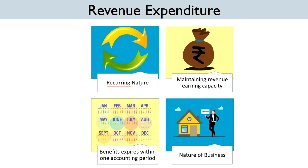The first criterion is Recurring Nature — revenue expenditure occurs frequently on a regular basis during the course of business. Further, any expenditure incurred to maintain the revenue-earning capacity of the business is regarded as Revenue Expenditure. It is important to understand that Revenue Expenditure is incurred to maintain, and not increase, the revenue-earning or working capacity of the business.